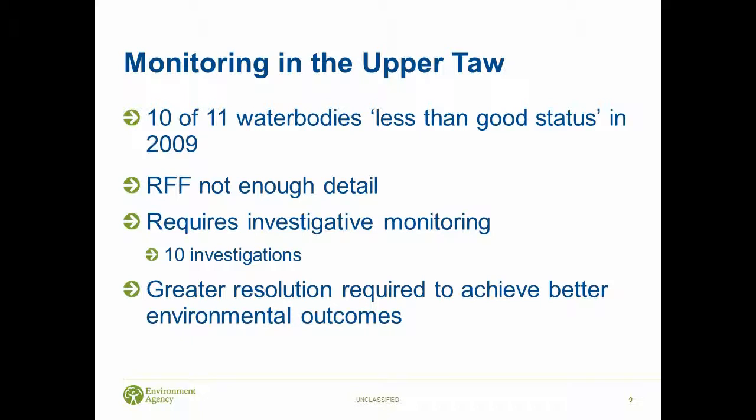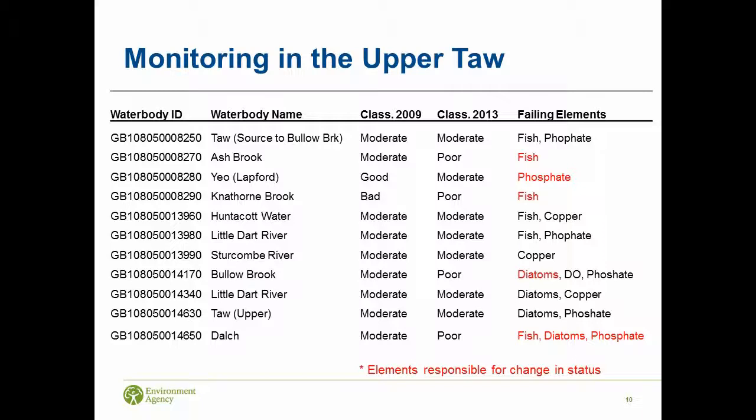This is a summary table of some of the data from the Toul showing the water body name, overall classification in 2009 and 2013, and the elements they're failing for - fish, phosphate, diatoms. The elements in red are mainly responsible for change between those classifications. This isn't necessarily because there's a deterioration in the catchments - it could be that in 2013 we did a lot of monitoring to collect baseline information for the WFD, so some elements were monitored that year that weren't in 2009 and may have failed. It's just a case of having more data.